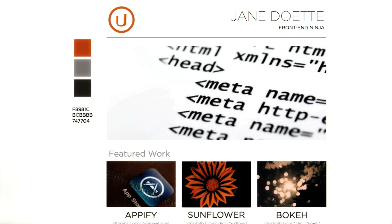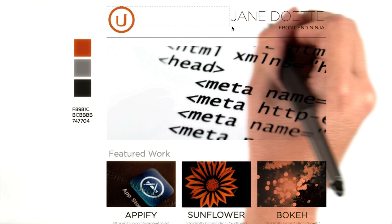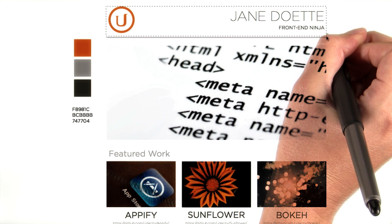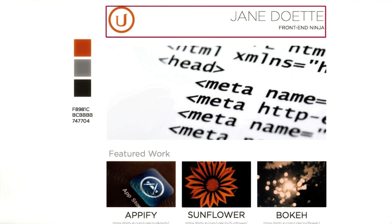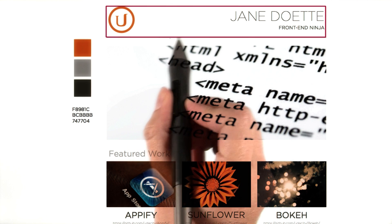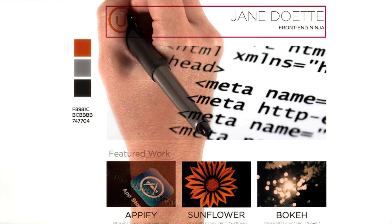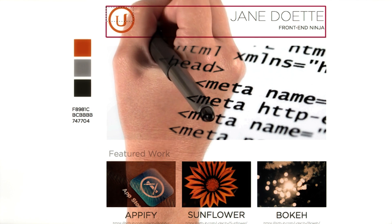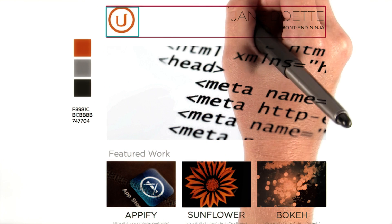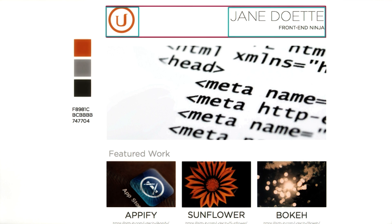I'll get you started by drawing the first three. First, we'll have a box around this header here. Now, inside this box, I see two other boxes — one around our image here, and another around our name and title over here.